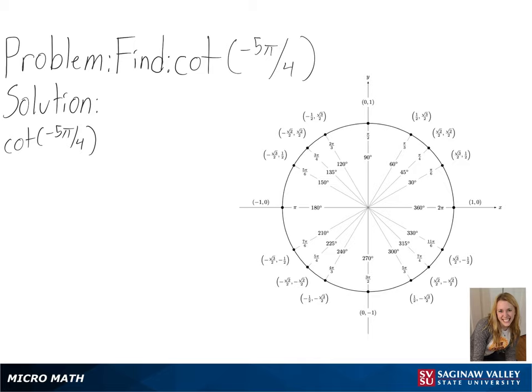Since our value has a negative input, we will be going clockwise instead of counterclockwise. So we will start at (1, 0) and then move clockwise until we have traveled the distance of 5π over 4, which in this case is equal to 3π over 4.